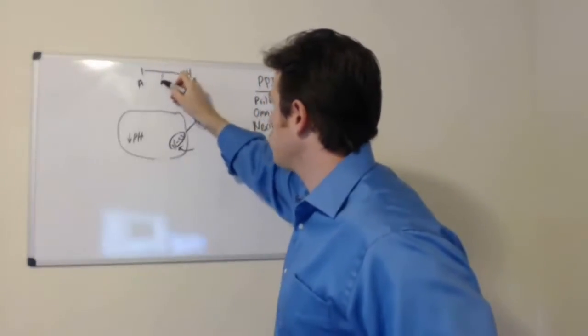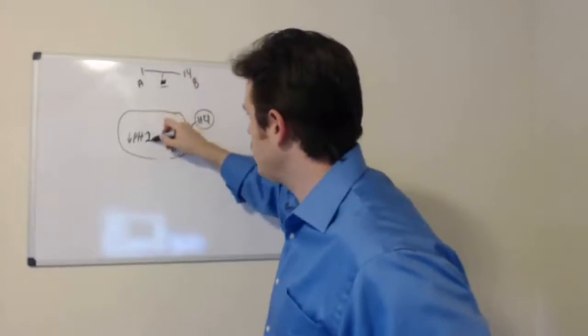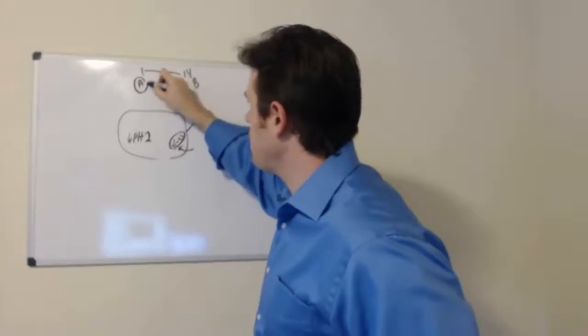And then right in the middle is neutral, that would be like where water is. So essentially our tummy is about a pH of 2. So it's very acidic.